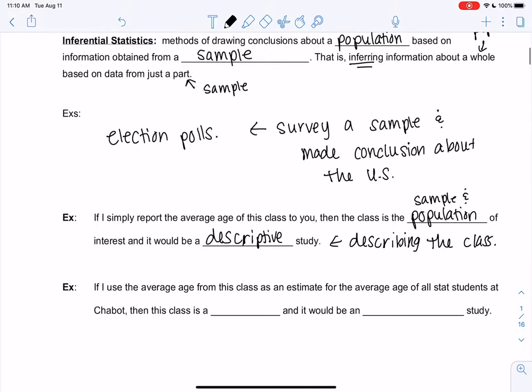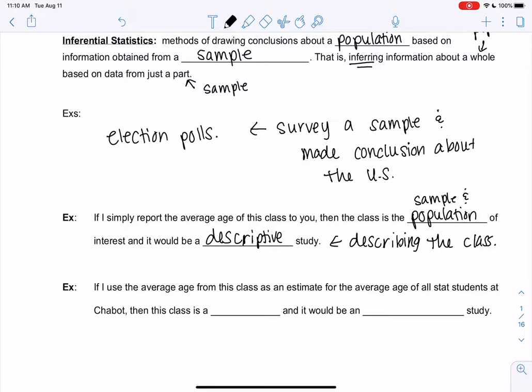But if instead I take you as a class and then I make a conclusion about all stat students at Chabot, right now you guys are only a sample, not the population. And it would be inferential because all stat students are now the population. So we're making a conclusion about a bigger group. So that's the big difference.